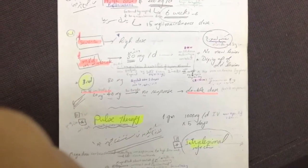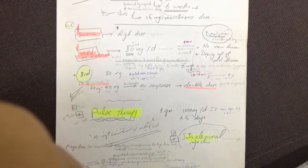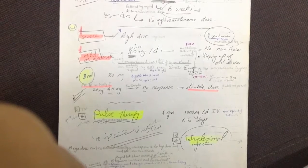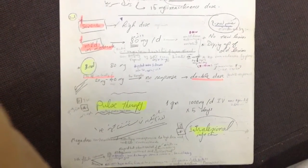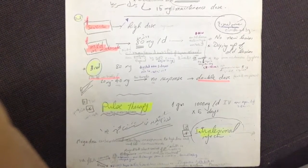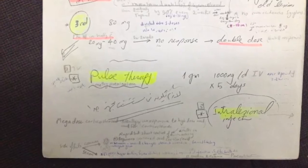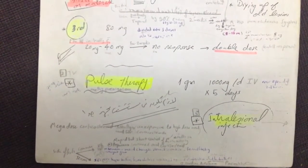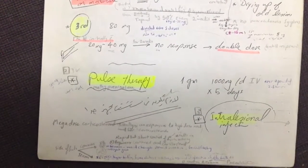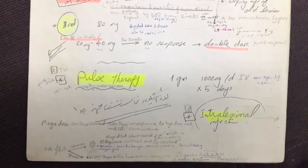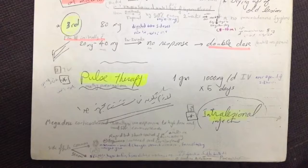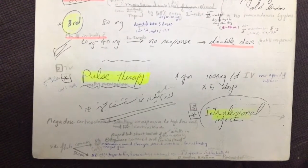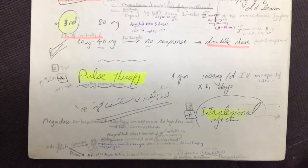For pulse therapy, the patient must be hospitalized. Give 1,000 mg per day intravenously over two to three hours for five days. This megadose corticosteroid is given if there is no response to high-dose oral corticosteroids. It gives rapid but short control of disease activity, followed by continuation of oral corticosteroids. Side effects include insomnia, mood changes, stomach irritation, facial flushing, weight gain, and serious effects like seizure, hypertension, severe electrolyte imbalance, myocardial infarction, sudden death due to cardiac arrhythmia, and pancreatitis.